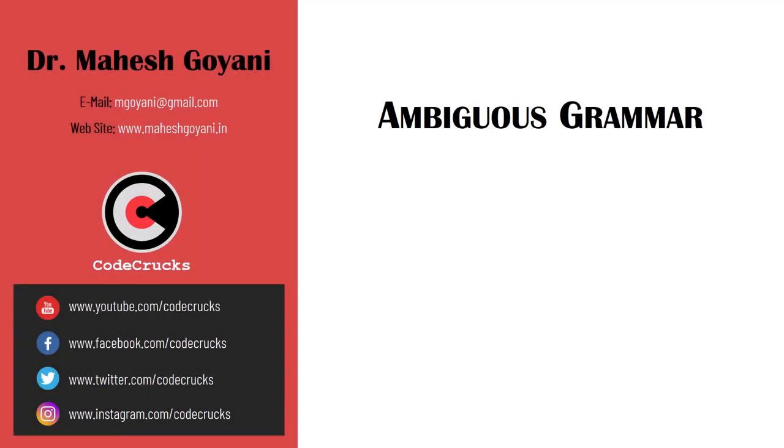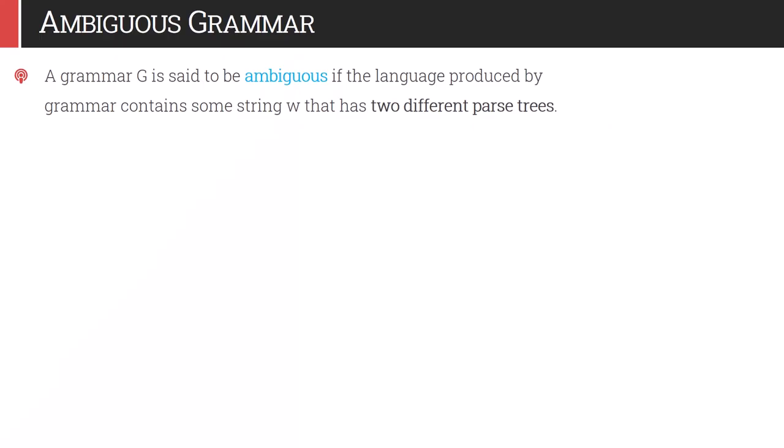Hello and welcome. In this video we will learn about ambiguous grammar. A grammar G is said to be ambiguous if the language produced by the grammar contains some string W that has two different parse trees. If for the same string which belongs to grammar G we can draw two different parse trees, then we can say that grammar is ambiguous.